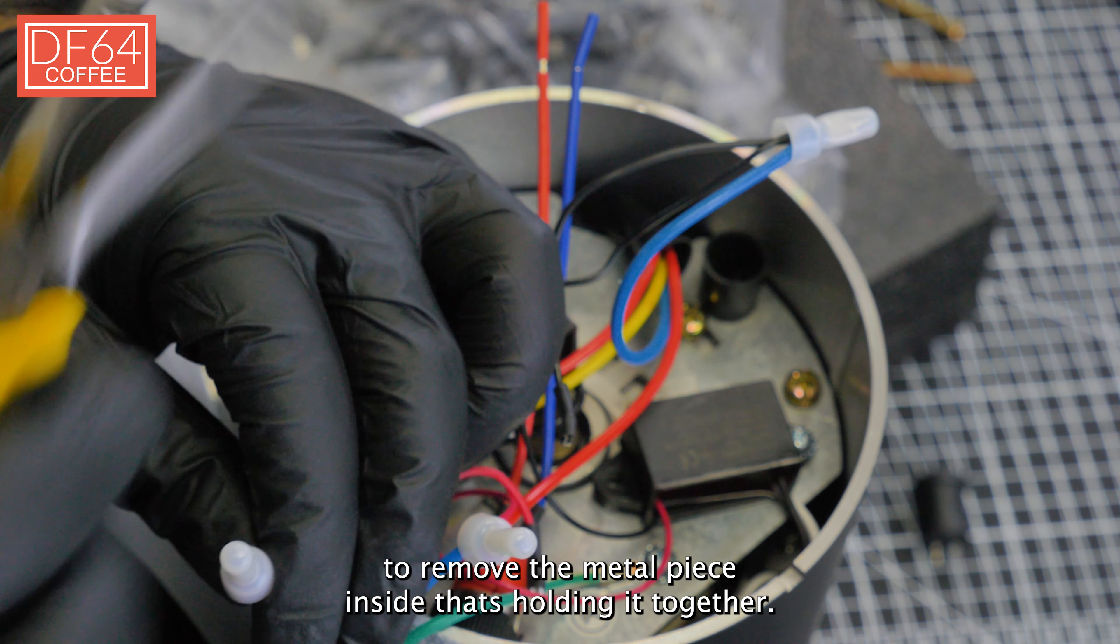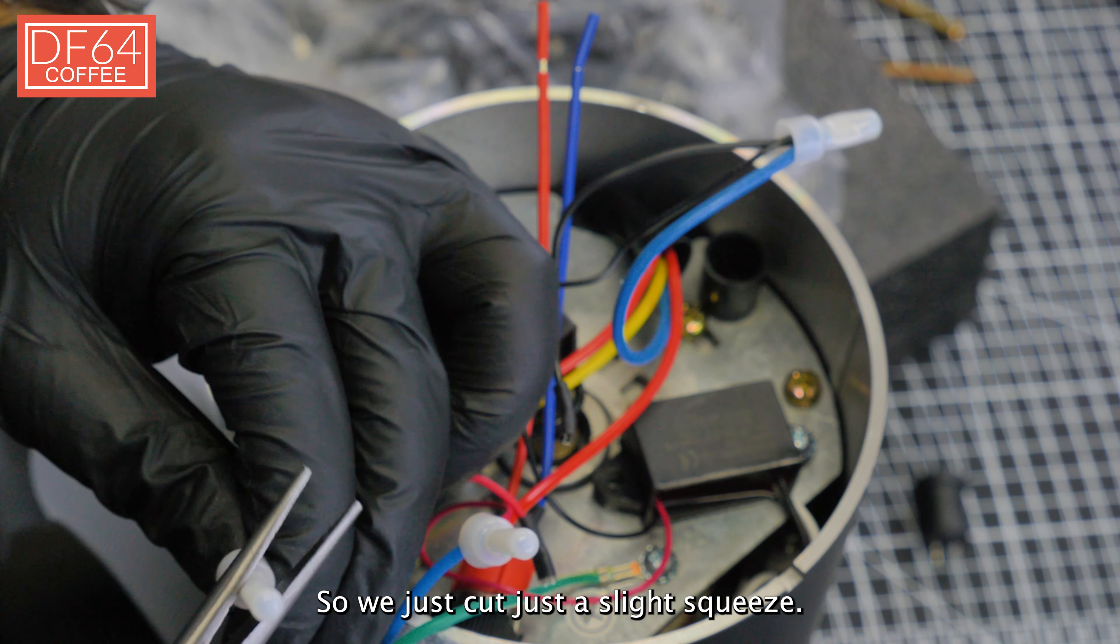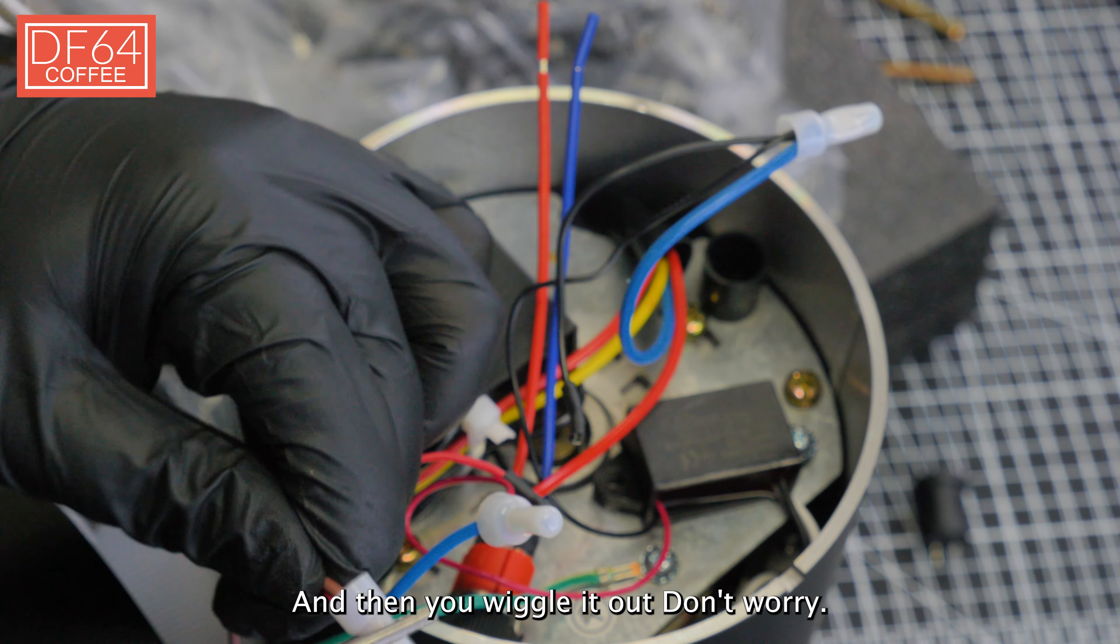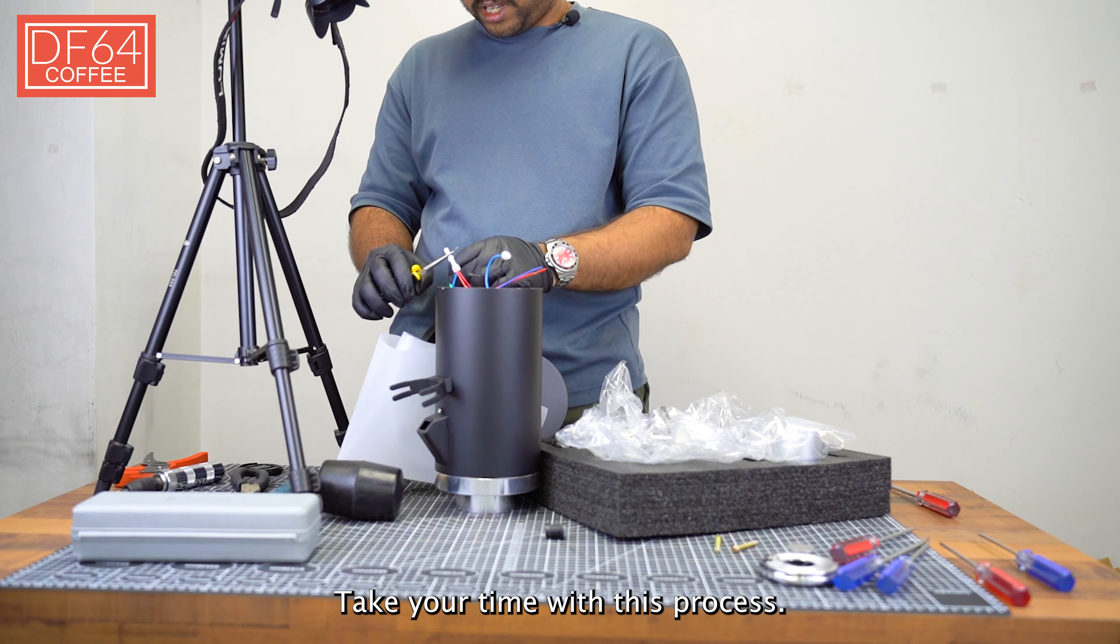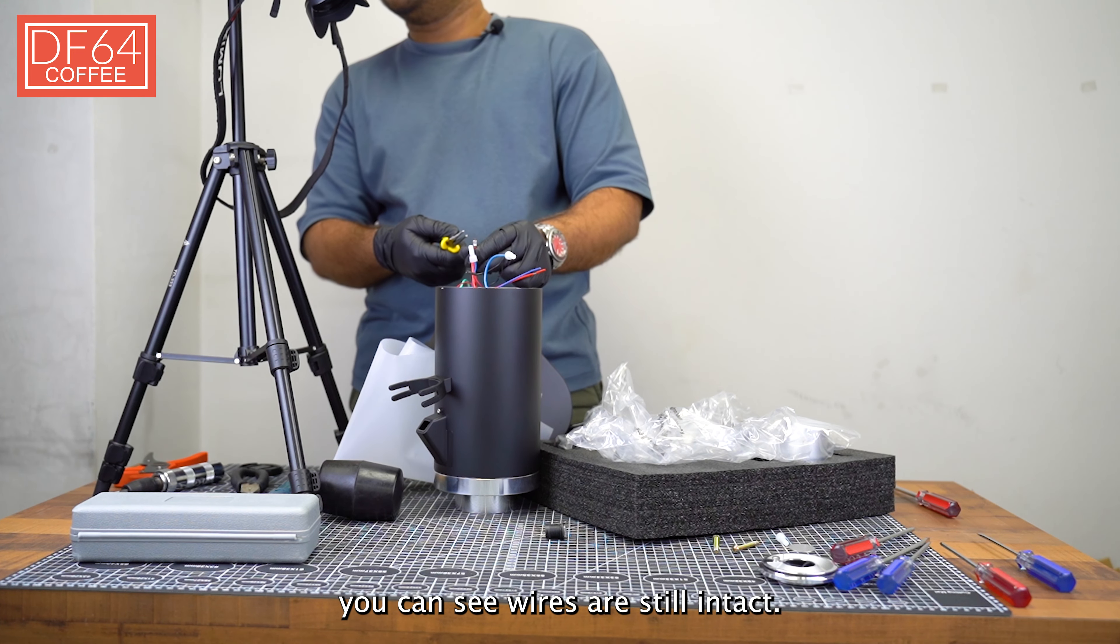Okay, so this part here is a little bit tricky. What you want to do is not press too hard. If you press too hard it's going to be very tough to remove the metal piece that's inside that's holding it together. So just a little tight, just a little squeeze, and then you wiggle it out. Don't worry, take your time with this process, it's fine.